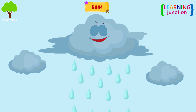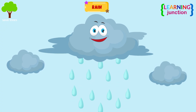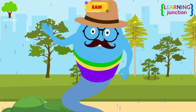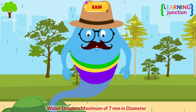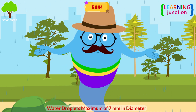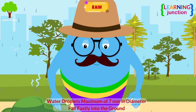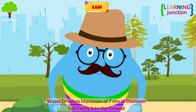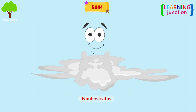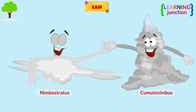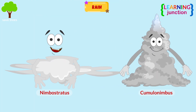Rain is the most common form of precipitation. In this, water droplets, which are a maximum of 7 mm in diameter, fall rapidly into the ground. Nimbostratus and cumulonimbus clouds are the main types of clouds responsible for rainfall.